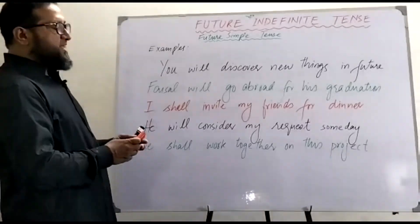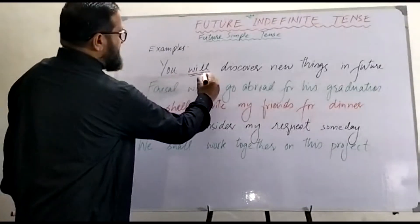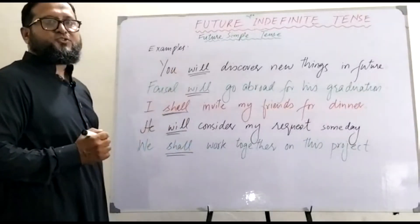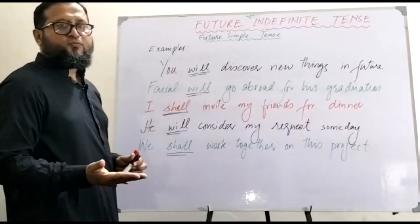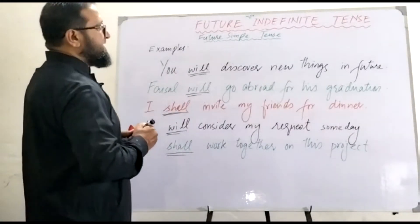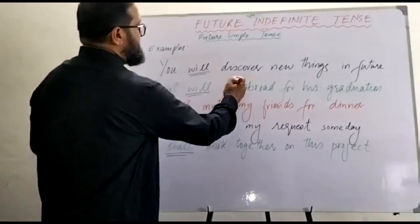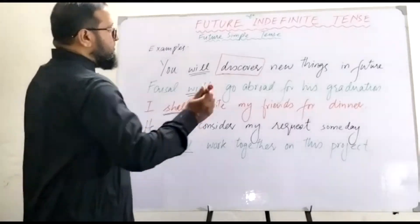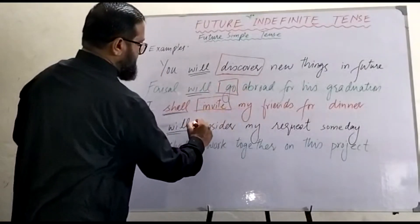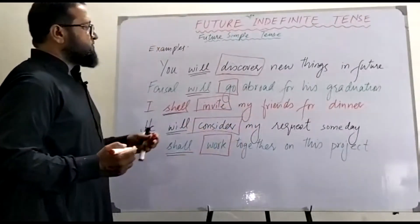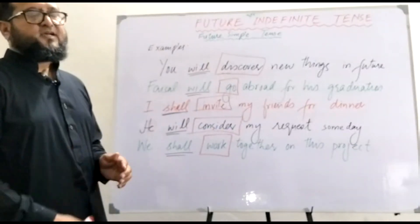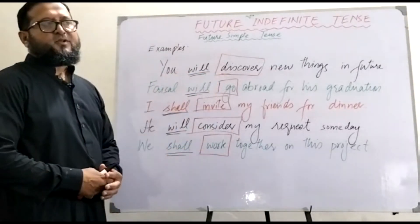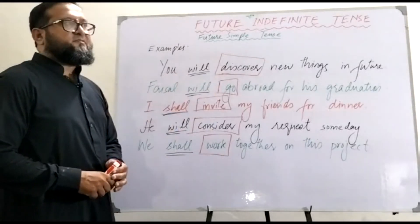Here are some examples. You can easily recognize and understand the formation — will is there, shall is there. These are the formations of future tense. What makes it different from the rest of the four future tenses is the first form of the verb — the base form. Here you see 'discover' — it is the first form, not the second form, not the third form, not the present participle, not the past participle. So it's very easy to recognize, understand, and write future indefinite tense: just use will or shall with the first form of the verb. With the help of these examples, I hope you will easily complete the given worksheets.